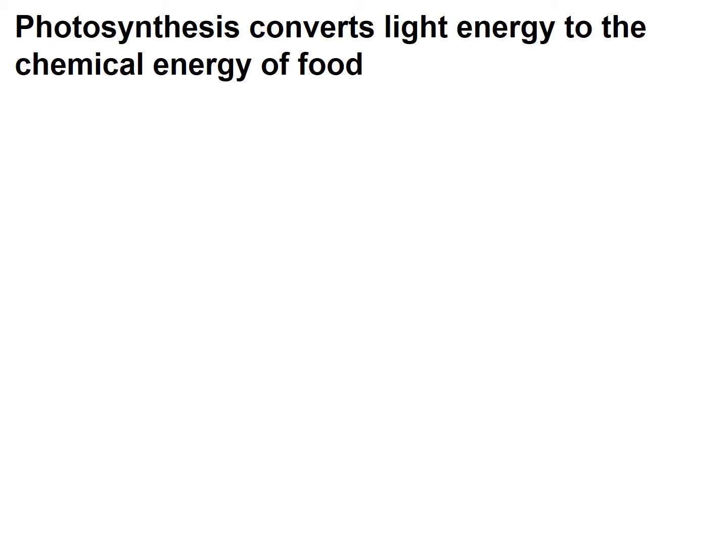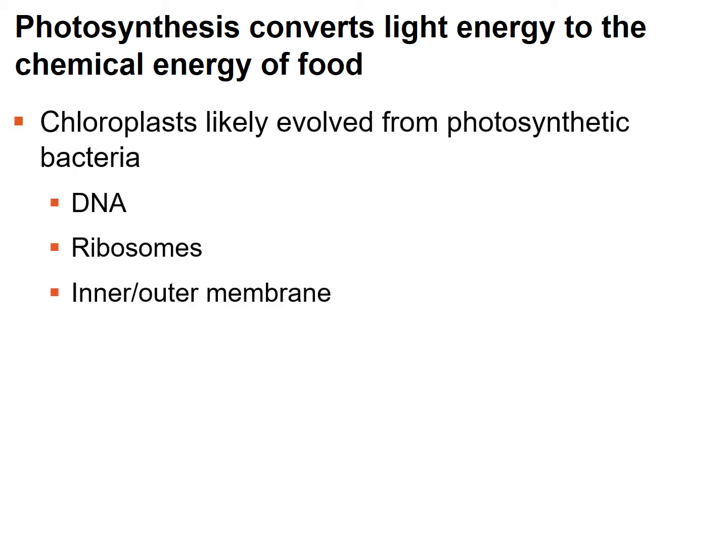Photosynthesis is the process of converting light energy to chemical energy for food. Organisms that can photosynthesize are autotrophs that produce their own food. Chloroplasts are where this occurs in multicellular organisms. For unicellular organisms, the whole organism can photosynthesize — the chloroplast is just one organelle within the eukaryotic cell.